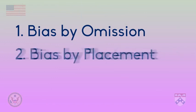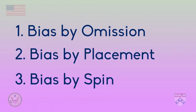These types of bias are bias by omission, bias by placement, and bias by spin. Now, let's see what these might look like.